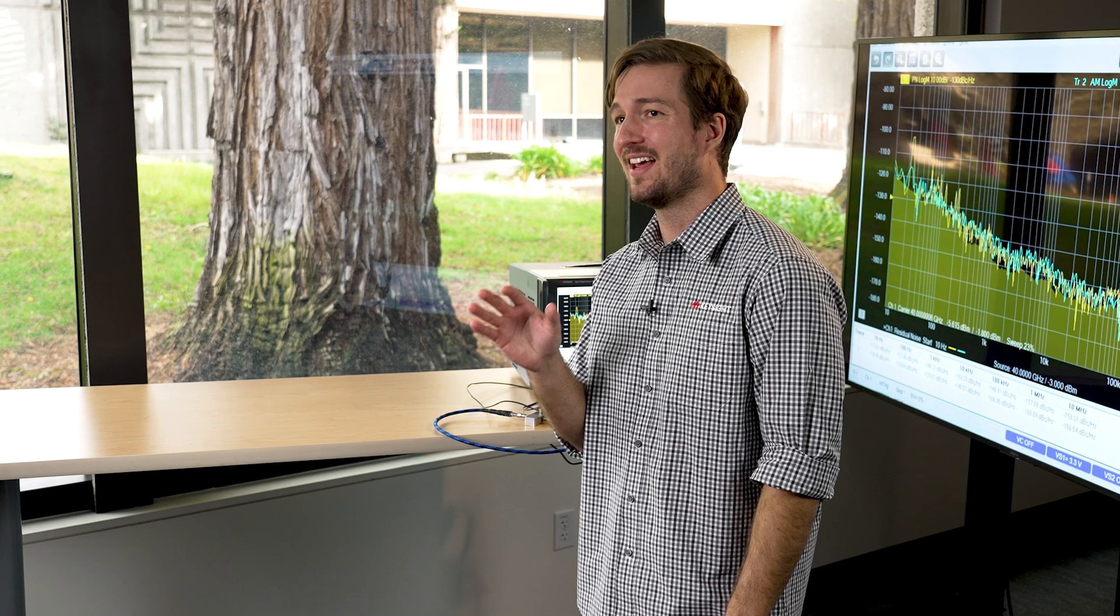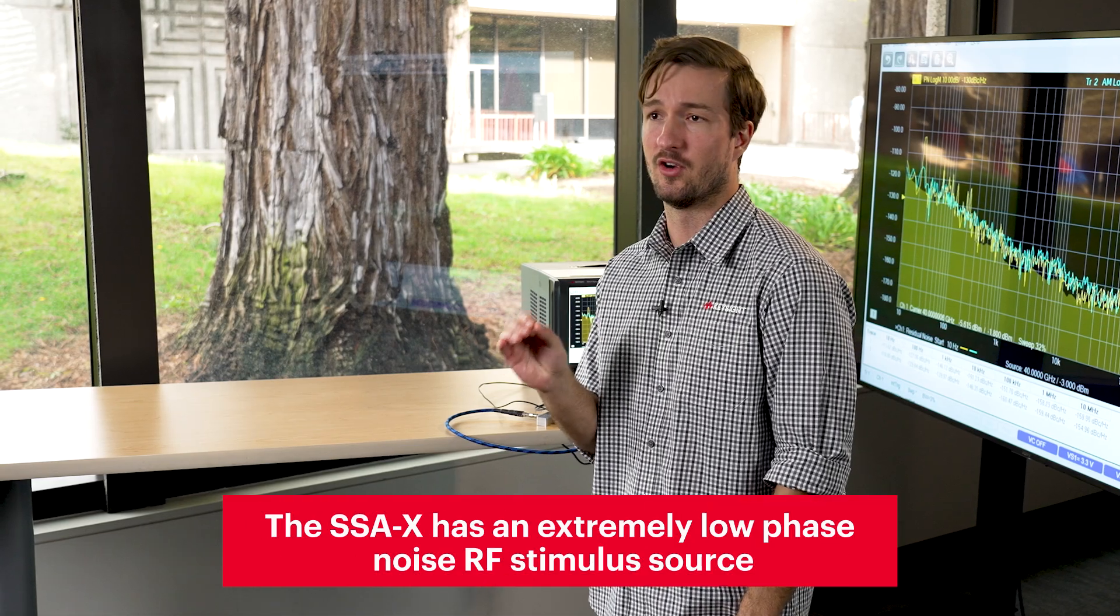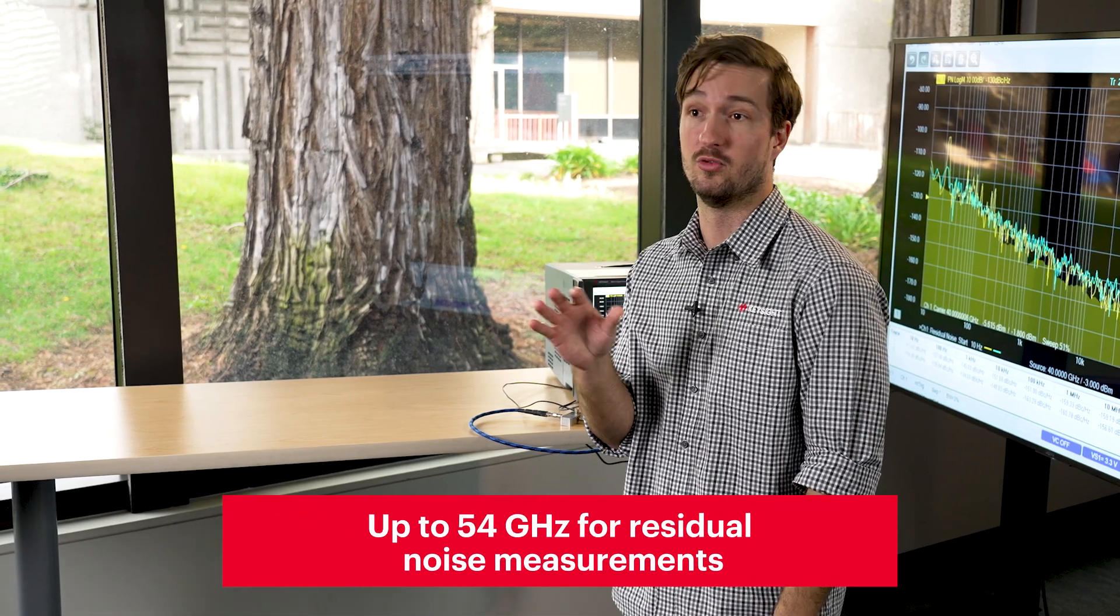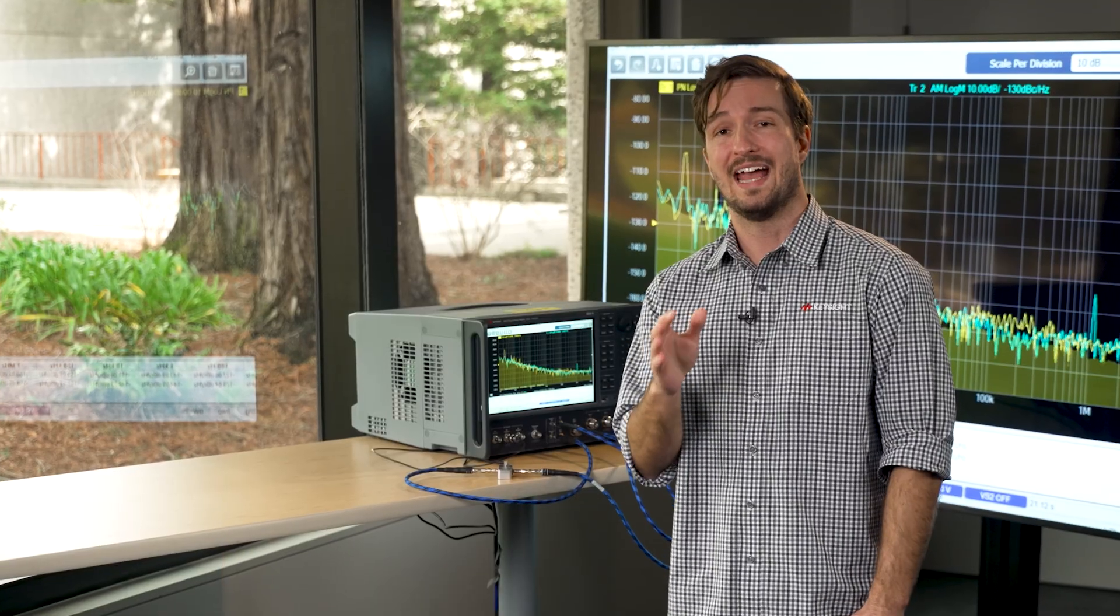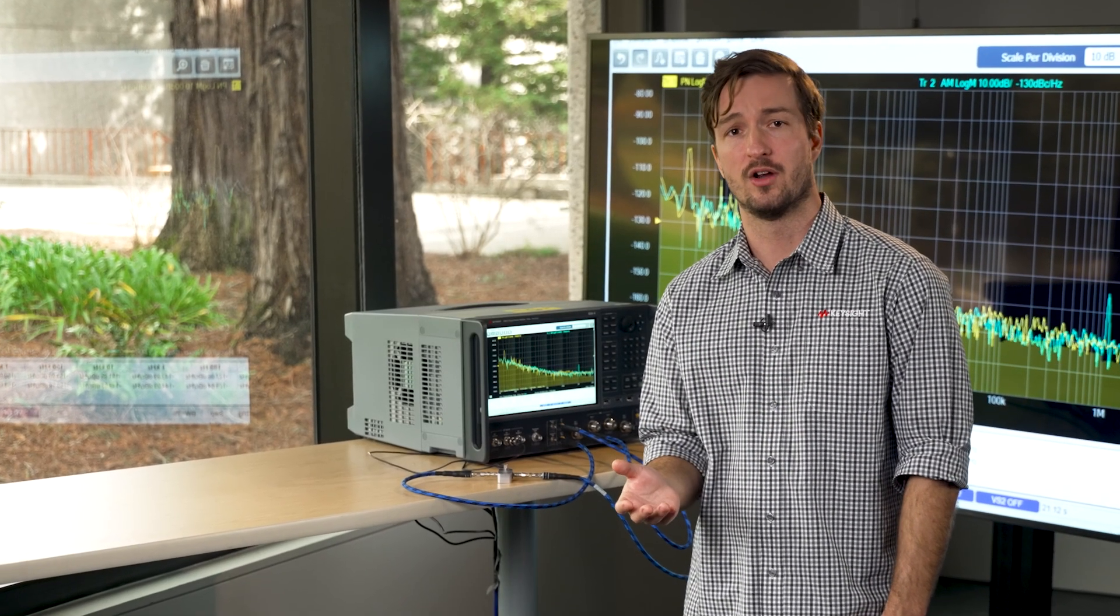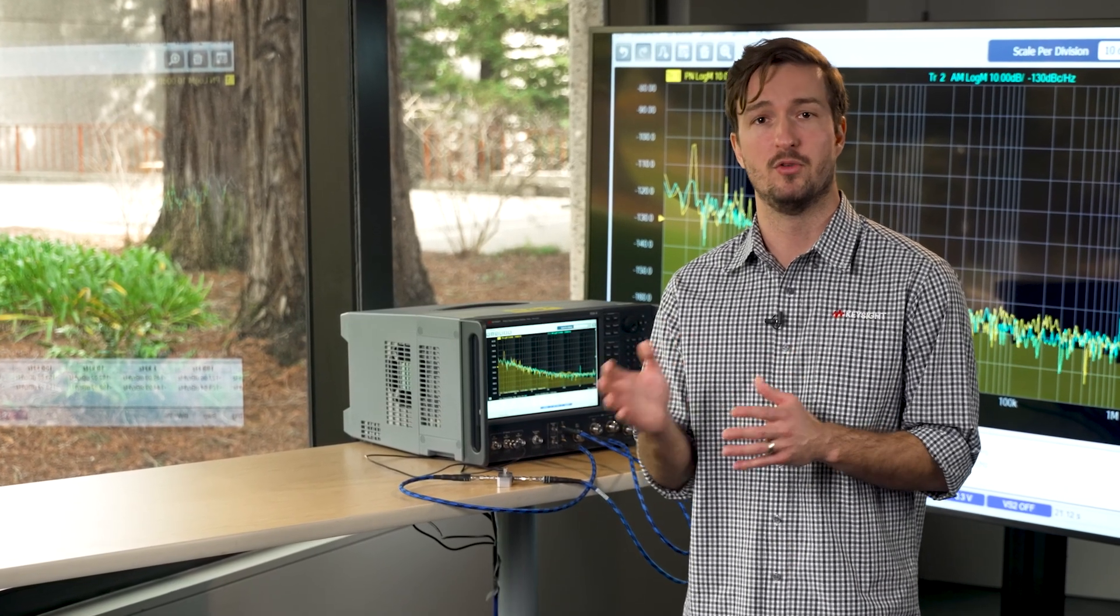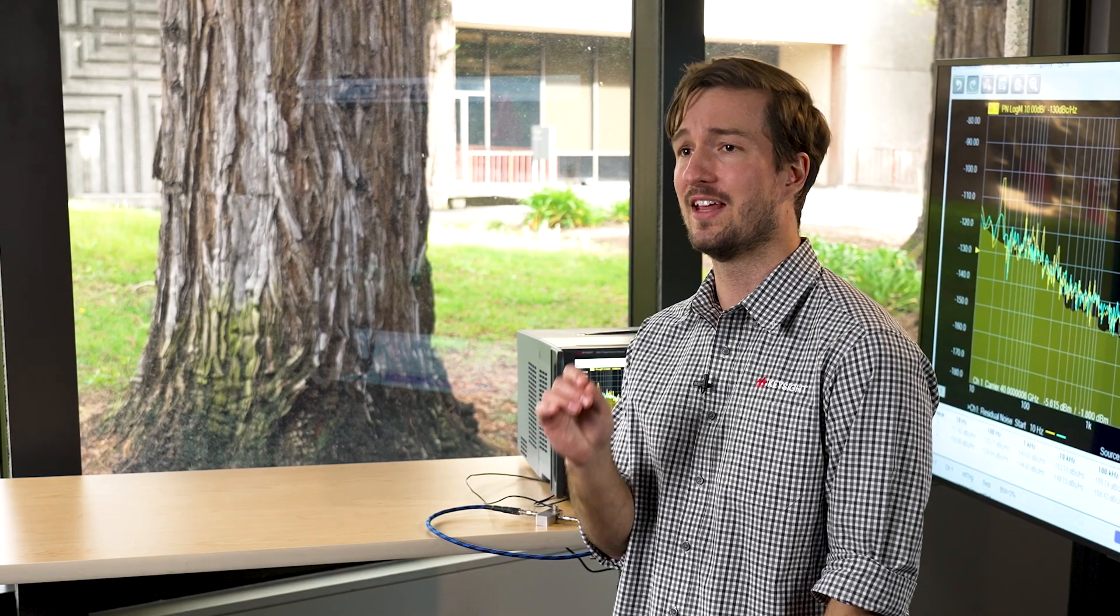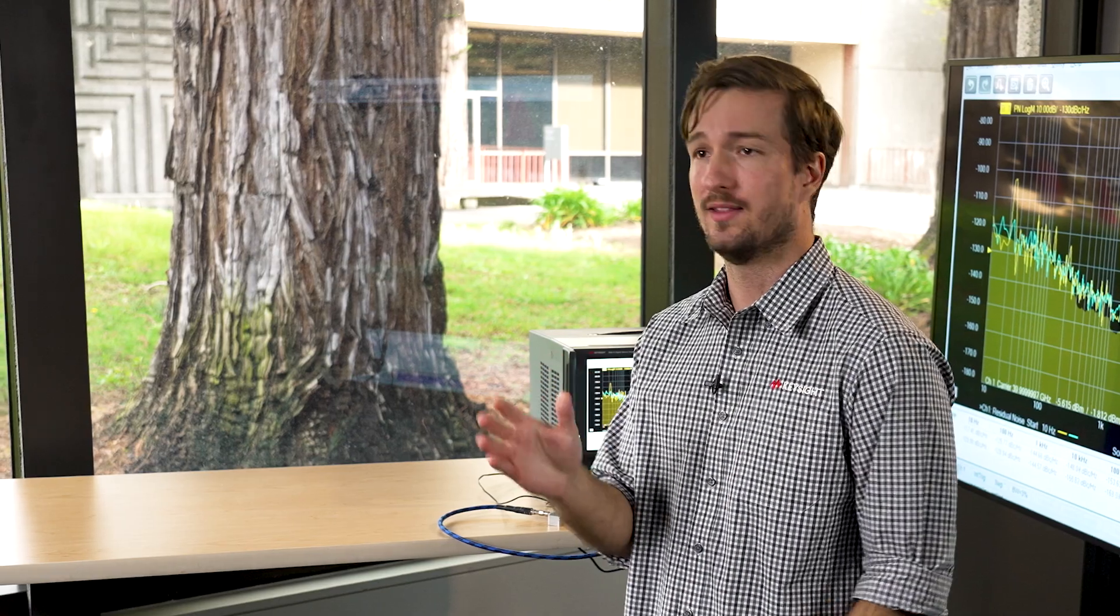The SSA-X has an extremely low phase noise RF stimulus source that goes up to 54 gigahertz for residual noise measurements. With the SSA-X, any noise from the RF stimulus source is a common mode signal into two receivers and ratioed out of the measurement such that the additive noise of the multiport DUT is the only thing that's measured.